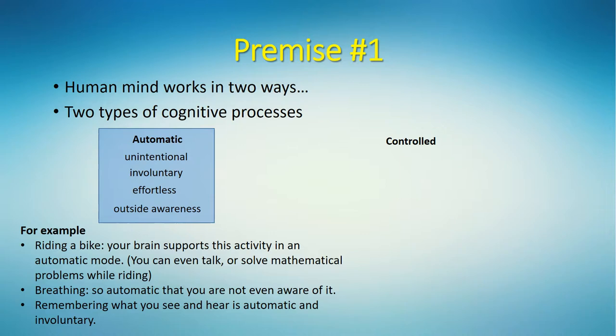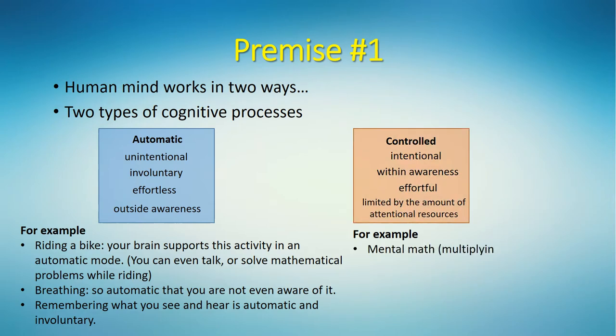On the other hand, controlled processes are intentional, within awareness, effortful, and limited by the amount of attentional resources available at the moment. For example, doing mental math like multiplying 57 by 65 is a controlled cognitive process. You cannot do mental math and read a newspaper simultaneously because you simply don't have enough attention to do it. Attention is a resource and it is limited.